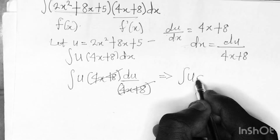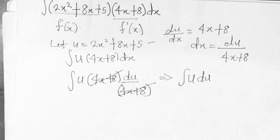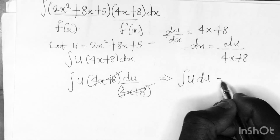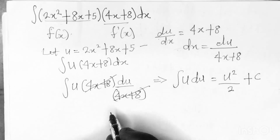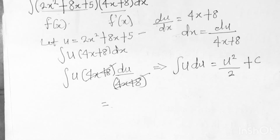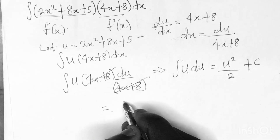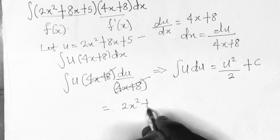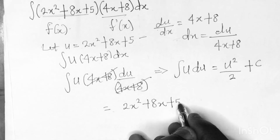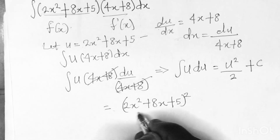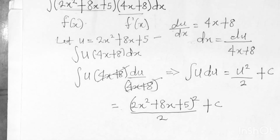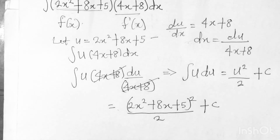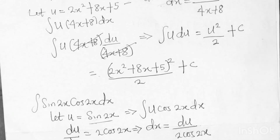We are left with ∫ u du, which gives u²/2 + C. Substituting u = 2x² + 8x + 5 back, the final answer is (2x² + 8x + 5)² / 2 + C.